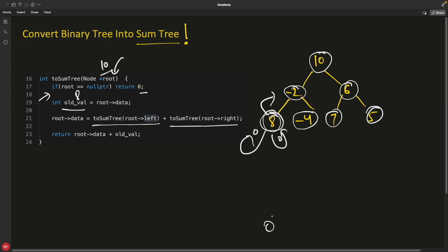So you will return 8 from here to this guy. This guy will receive 8. Similarly, this guy will receive minus 4. So 8 minus 4 is minus 4. So you will have minus 4 here.